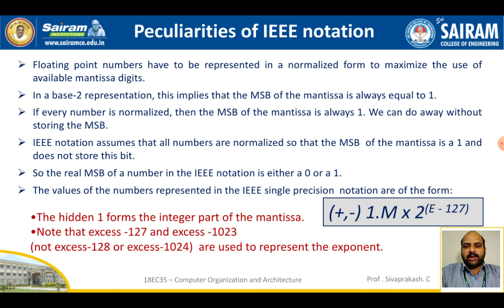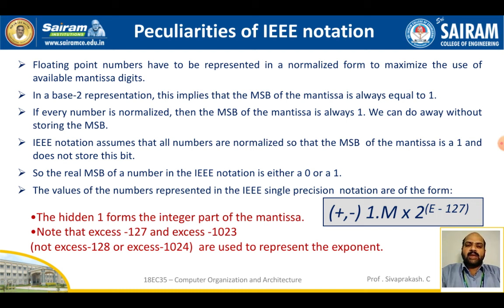The key peculiarity of IEEE notation is that floating point numbers are represented in normalized form to maximize the use of available mantissa digits. In base-2 representation, this means the most significant bit of the mantissa is always 1. Since every normalized number has MSB = 1, IEEE notation does not store this bit explicitly — it is the hidden bit.